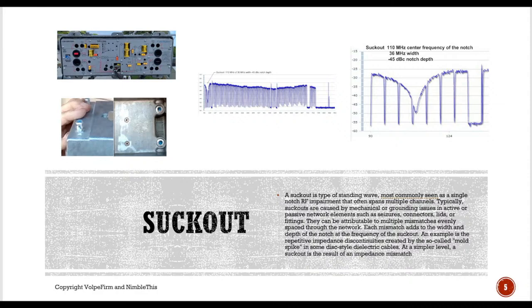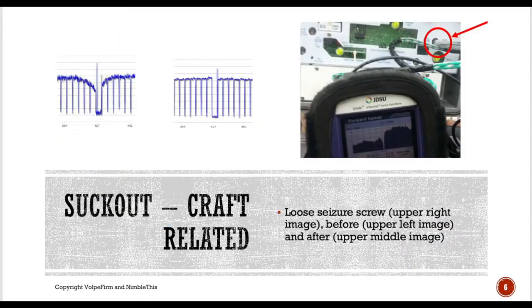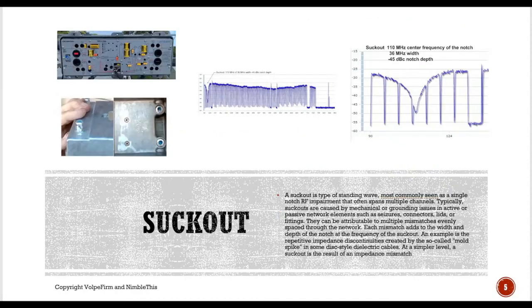What can a tech do? A lot of times a tech will hit an amplifier with a rubber mallet — that causes the corrosion on the bottom of the amplifier module to break up a little bit, making the suck out go away. But that's just a temporary fix. The better solution is to pull out the amplifier. There are sprays we can apply or mechanical abrasion. Ideally, at SECORE we used to have a sandblasting room where we'd sandblast the housings and modules to get rid of that corrosion.